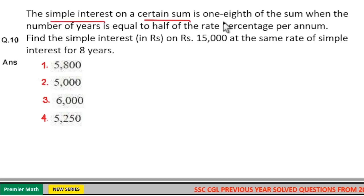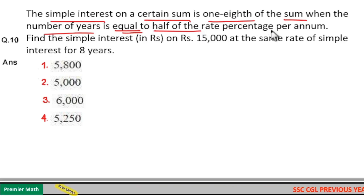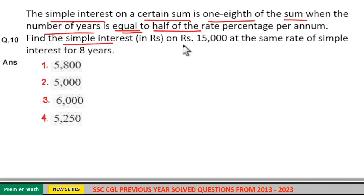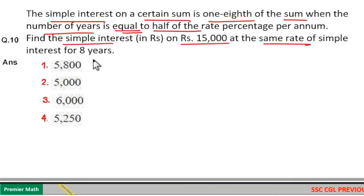The simple interest on a certain sum is one-eighth of the sum. When the number of years is equal to half of the rate percentage per annum, find the simple interest on Rs. 15,000 at the same rate for 8 years.